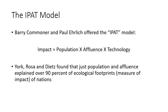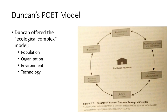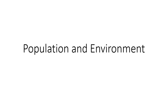Many environmental impacts are certainly a problem of population, but population is not the only part of the story. The IPAT model, offered by Commoner and Ehrlich, is a useful rule of thumb: it's not just population, but also levels of affluence and technology that shape our exposure to different types of environmental impacts. A study by York, Rose, and Dietz found that population and affluence alone explained over 90% of the variation in the ecological footprints of nations, which relates strongly to levels of consumption. Similarly, Duncan's POET model — examining the relationship between population, social organization, environment, and technology — leads us to consider the same types of issues. That concludes our discussion of population and environmental impacts.